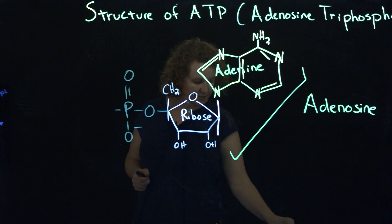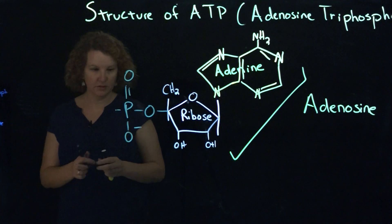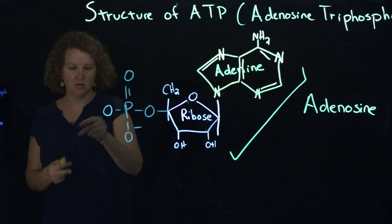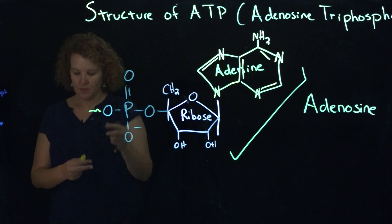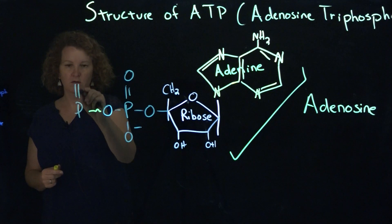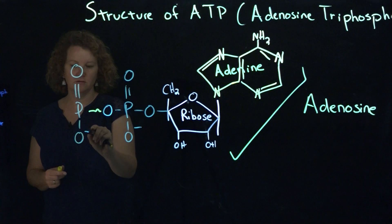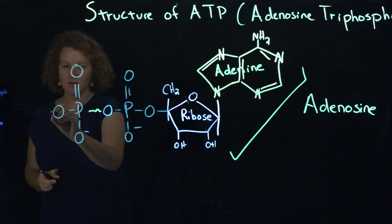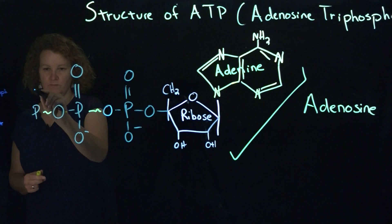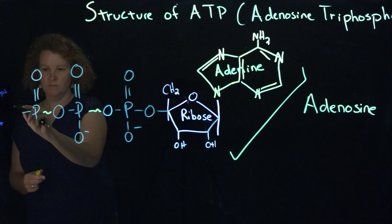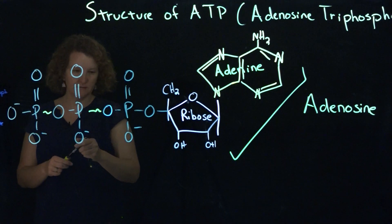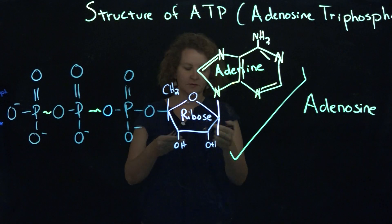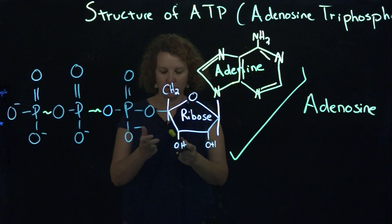Where the real magic is, is in this wavy line here between the phosphate groups. Here's your phosphorus with your oxygens attached, and then you have that last one out here. Those are your phosphate groups. Keep in mind that in a nucleic acid, it's just going to be these first three pieces: the adenine, ribose, and phosphate — so it's a familiar structure with some similarities there.